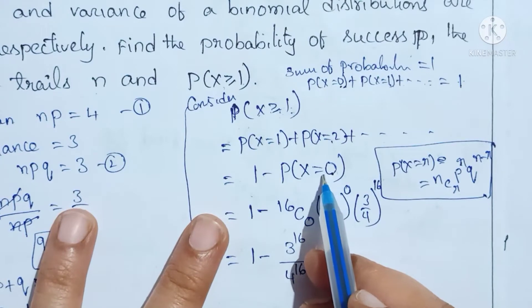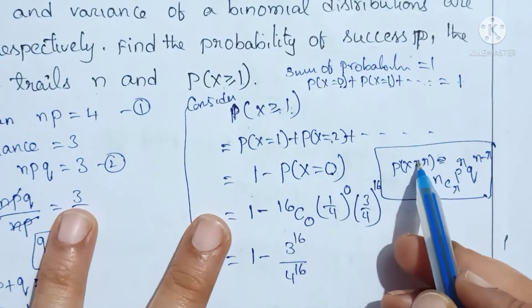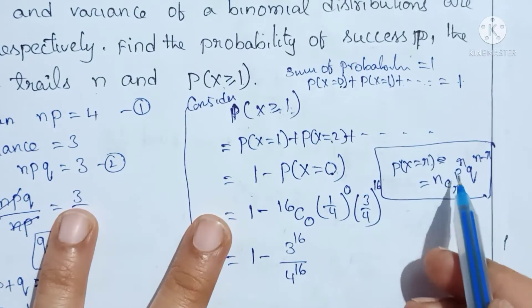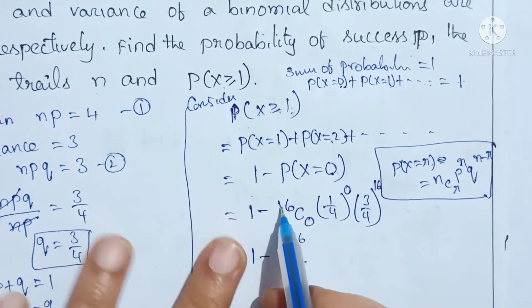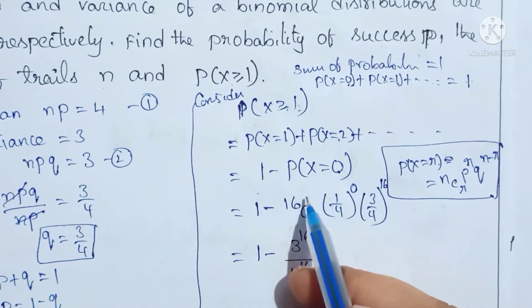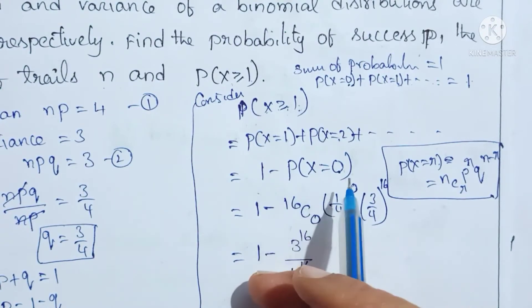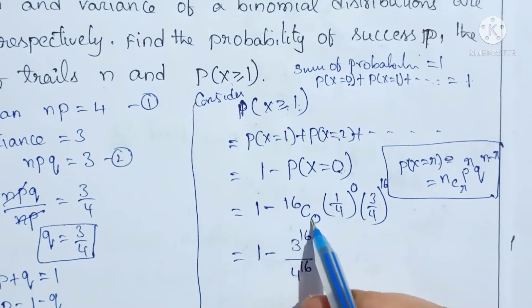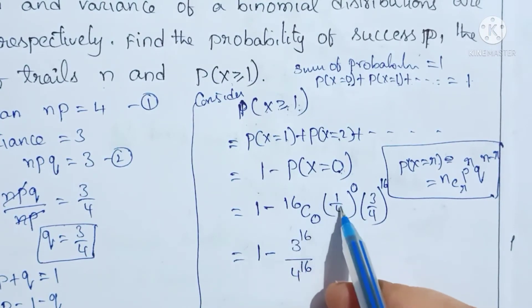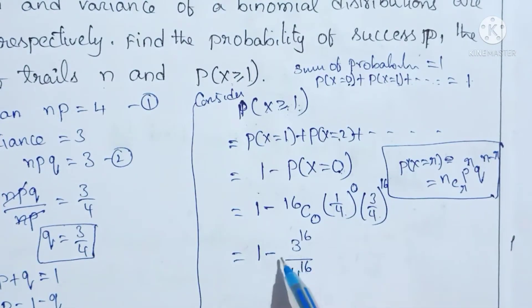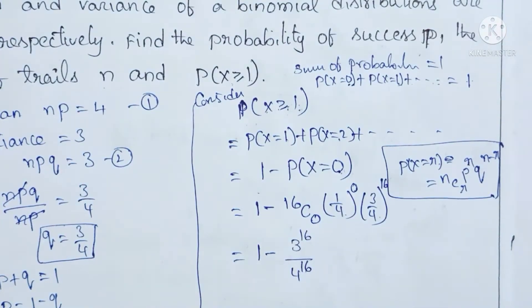So 1 minus P(X=0). Binomial distribution formula: P(X=R) = NCR × P^R × Q^(N−R). Here Q = 1 − P. So with n=16, P(X=0) = 16C0 × (1/4)^0 × (3/4)^16. The result is 1 minus (3^16 / 4^16).